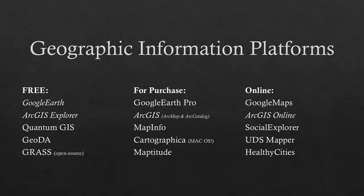There are literally hundreds of other online map services. A really popular one is Social Explorer, which is great for looking at different types of demographic and administrative data. UDS Mapper and Healthy Cities are really good for looking at different types of public health data. What's great about these online map services is they don't just display data — they also allow you to create maps with built-in tools, making them fairly full-blown specialized GIS platforms.